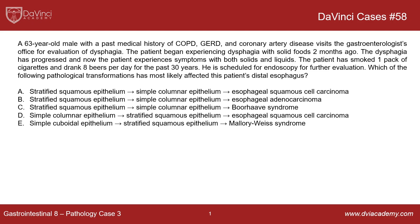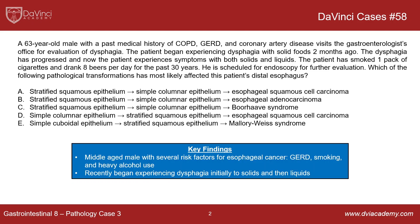So the question is: which of the following pathological transformations has most likely affected the patient's distal esophagus? The key findings, just to summarize: we have a middle-aged male with several risk factors for esophageal cancer specifically, which is what the GI doctor is probably most concerned with here.